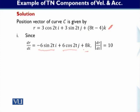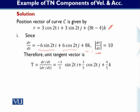Now we need the magnitude. The magnitude of dr/dt is equal to 10. From this we can derive the unit tangent vector. The unit tangent vector T equals dr/dt divided by the magnitude of dr/dt. So the final result is T equals minus (3/5)sin(2t)i plus (3/5)cos(2t)j plus (4/5)k. This is the unit tangent vector.